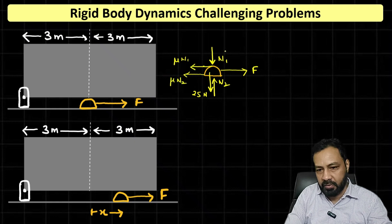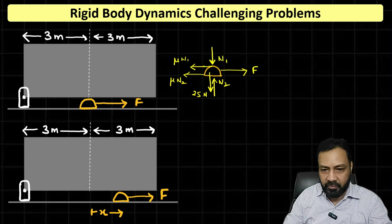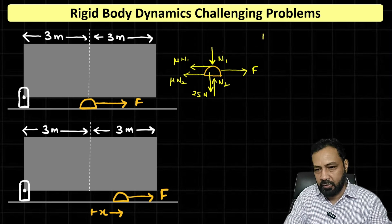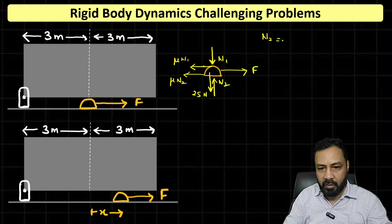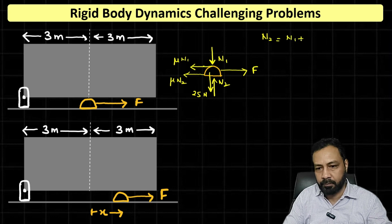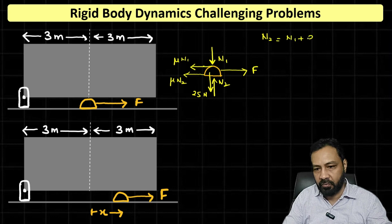And suppose its acceleration is A. One thing is that N2 equals N1 plus its weight, 25 kg.